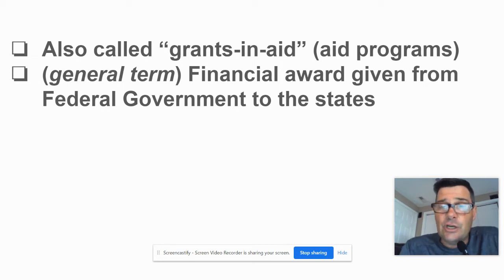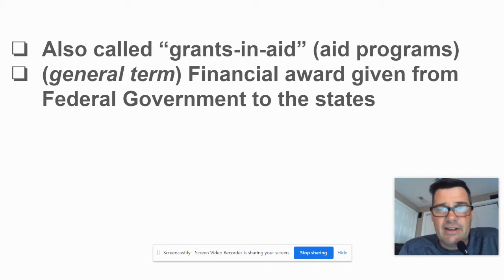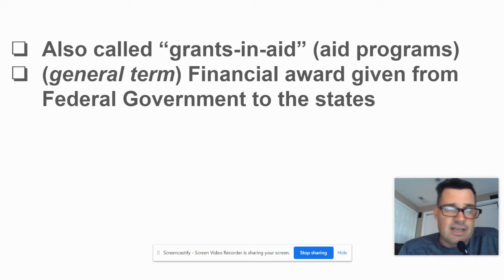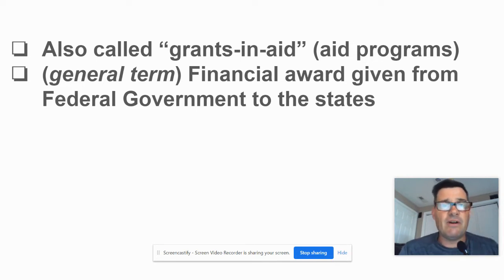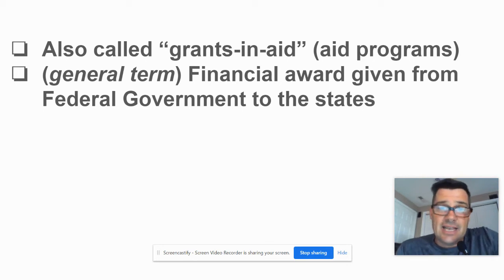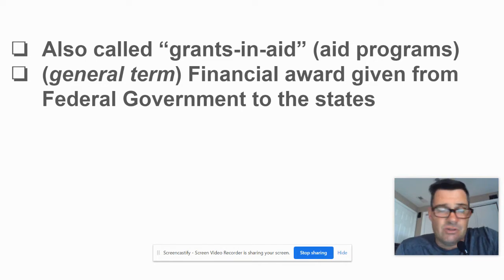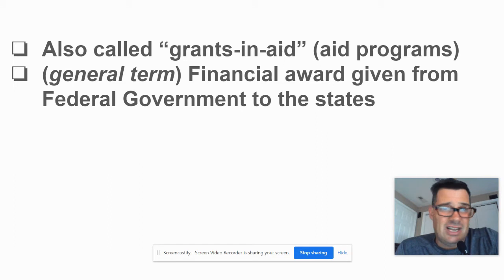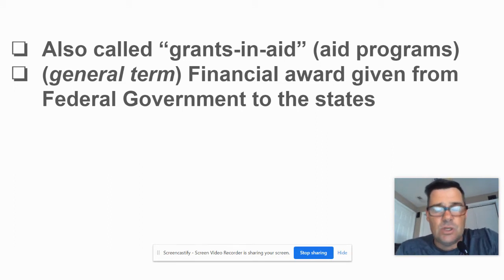Every state took the grants and raised the drinking age to 21, except Louisiana. Eventually, by the late 80s, Louisiana even submitted because they needed the money for the roads. So the federal government has a lot of power using these grants to get access to and change policy that otherwise it wouldn't have access to — like setting a drinking age. That's a state thing; it's not in the Constitution, it's not enumerated. So how does the federal government influence it? Using grants.